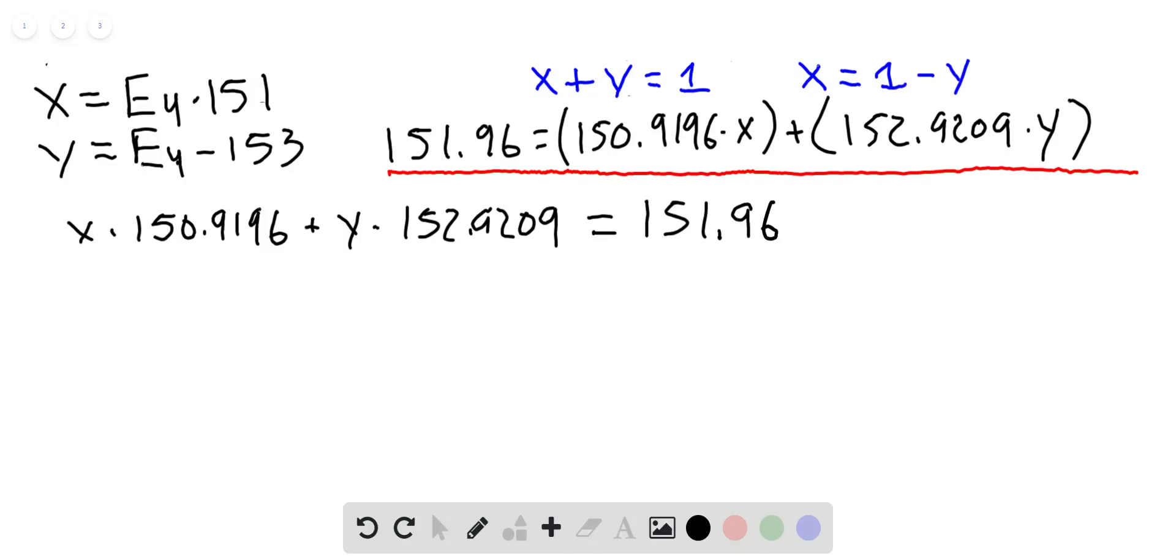So what I'm going to do is substitute this x here into the x for my equation so I just have y. So I'm going to plug that x value right into there and so I'll be able to rewrite my equation in terms of y. And so now I will have 1 minus y times the 150.9196 plus y times the 152.9209 equals the 151.96.